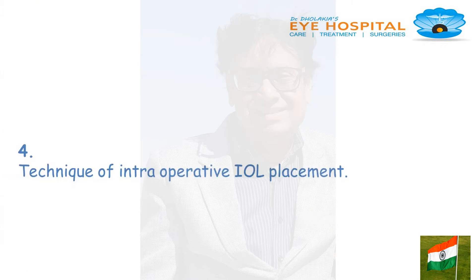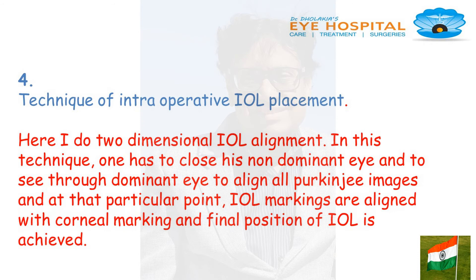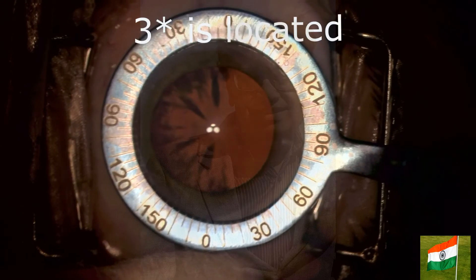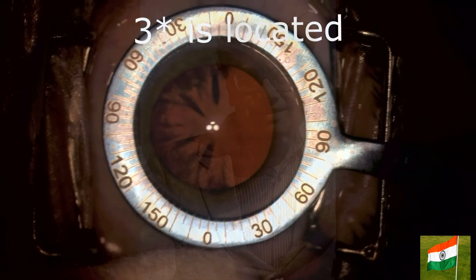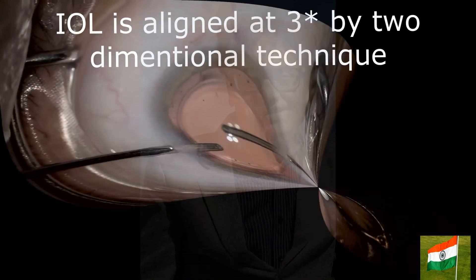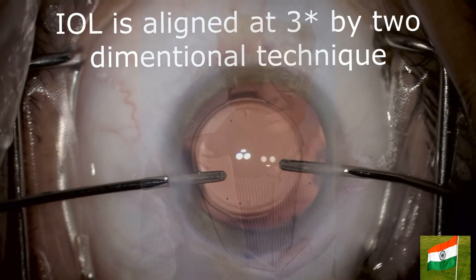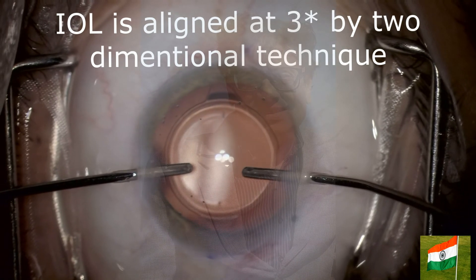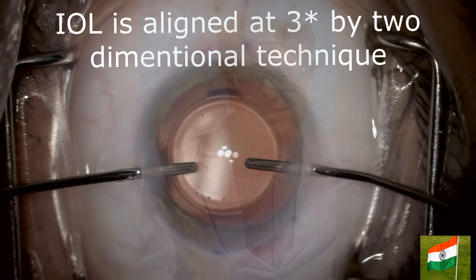Topic 4: Technique of intraoperative IOL placement. Here I do two-dimensional IOL alignment. In this technique, one has to close the non-dominant eye and see through the dominant eye to align all Purkinje images. At that particular point, IOL markings are aligned with the corneal markings and the final position of IOL is achieved. Here, 3 degrees is the target — the IOL is aligned at 3 degrees by the two-dimensional technique. My left eye is closed and my right eye is open.